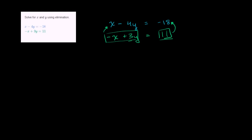And so let's see what happens when we do that. Well, the whole purpose is that you have an x minus an x. Those cancel out. And then you're just left with negative 4y plus 3y. Negative 4 of something plus 3 of something is you're going to have negative 1 of that something, or you could just say negative y.